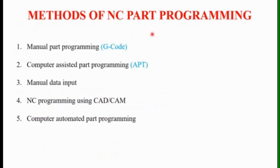There are five basic methods of NC part programming: manual part programming (also called G-code programming), computer assisted part programming (APT), manual data input, NC programming using CAD/CAM, and computer automated part programming.